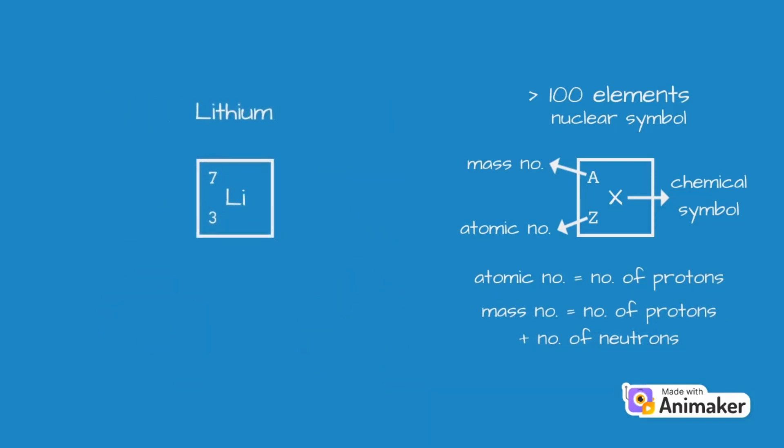For example, the element lithium is represented by this nuclear symbol. As such, its atom consists of three protons and four neutrons. Moreover, it consists of three electrons as the number of protons and electrons are equal to make the atom neutral.